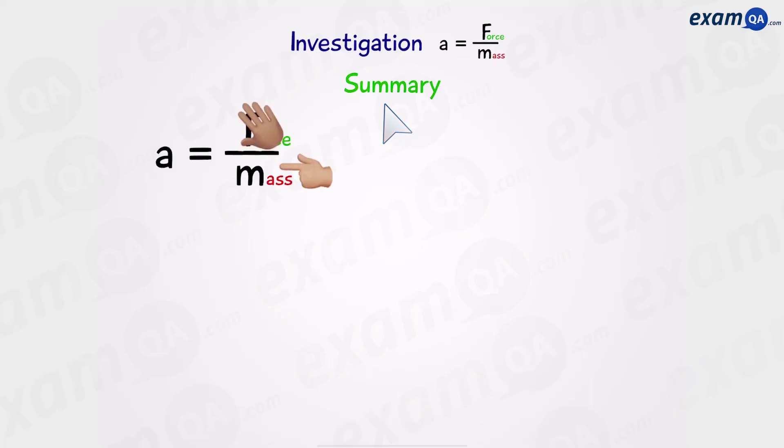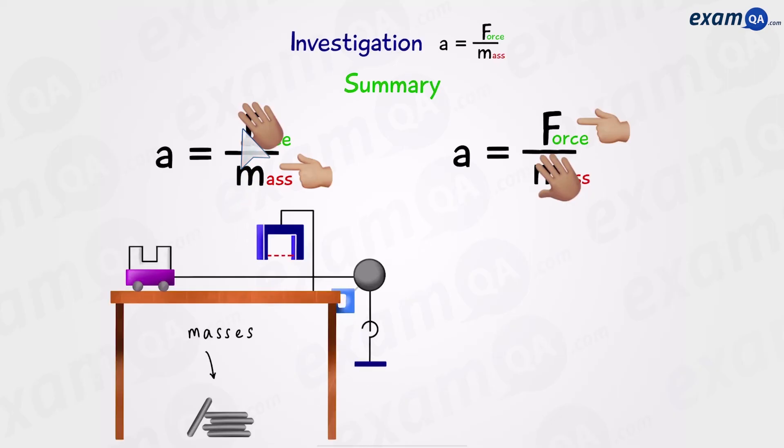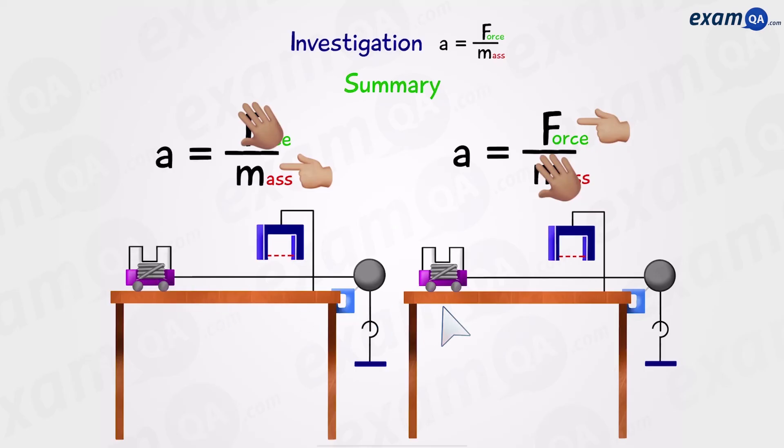To summarize, we can either investigate the effect of mass on acceleration or the effect of force on acceleration. If you want to investigate the effect of mass, keep the force constant. We do this by keeping all the masses off the trolley first, then placing them one by one onto the trolley, each time recording acceleration. If you want to investigate the effect of force, then you're going to start by putting all the masses on the trolley, and then one by one transfer them to the hanging masses. This will keep the mass of the whole system constant yet increase the force.